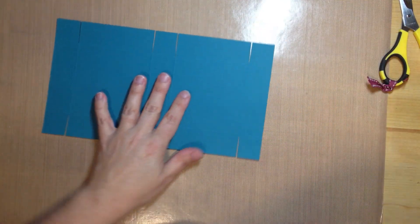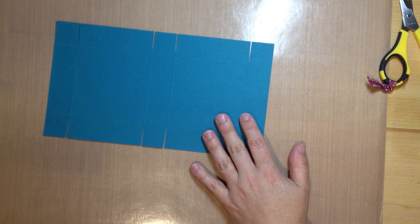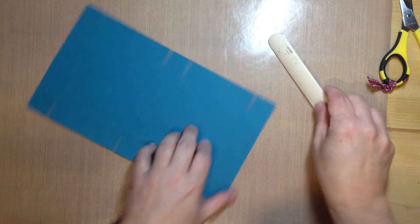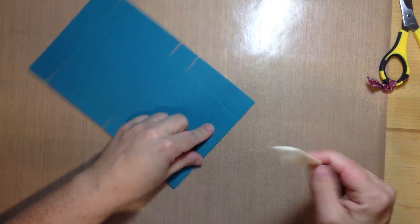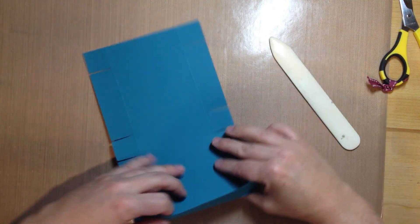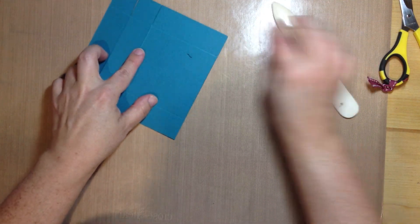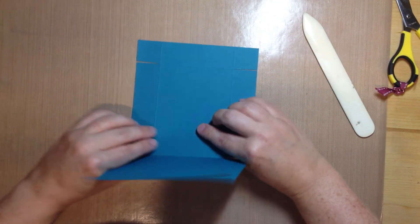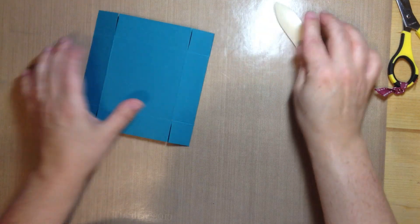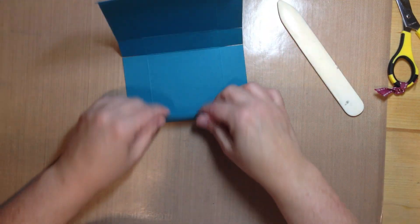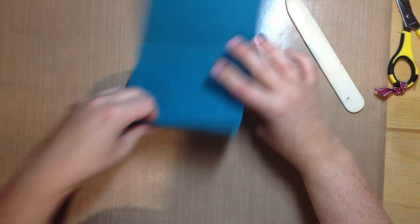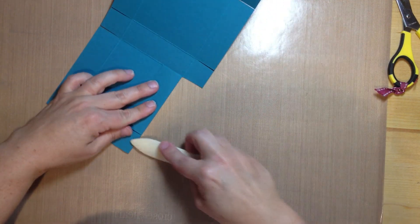And then we're going to fold along the score lines. And I'm just going to grab my bone folder here. So you want to make sure these are nice and crisp. And then going this way as well.